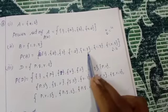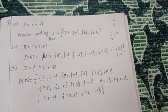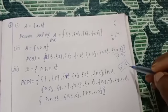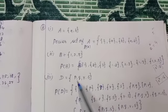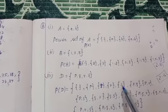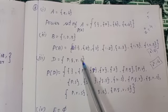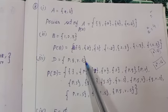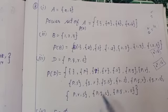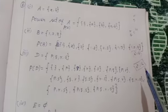For D = {P, Q, R, S} with 4 elements, 2⁴ = 16 subsets. Start with empty set, then single elements: {P}, {Q}, {R}, {S}. Then double elements: {P,Q}, {P,R}, {P,S}, {Q,R}, {Q,S}, {R,S}. Then triple elements: {P,Q,R}, {Q,R,S}, {P,R,S}, {P,Q,S}. Then all four together: {P,Q,R,S}. Totally 16 subsets.